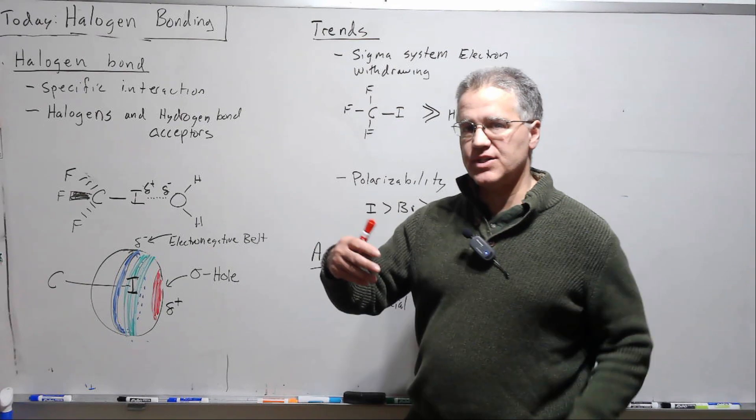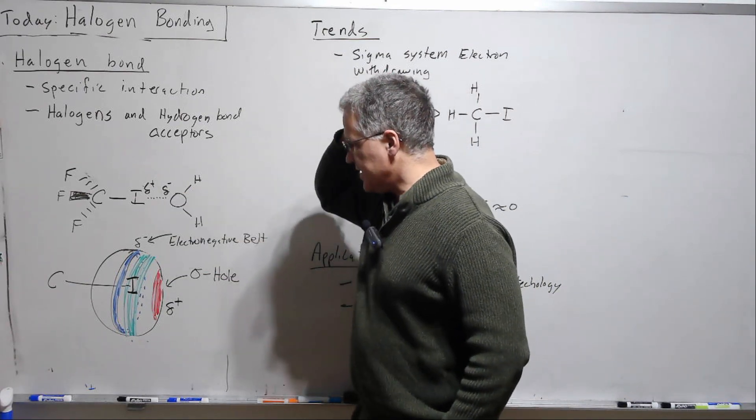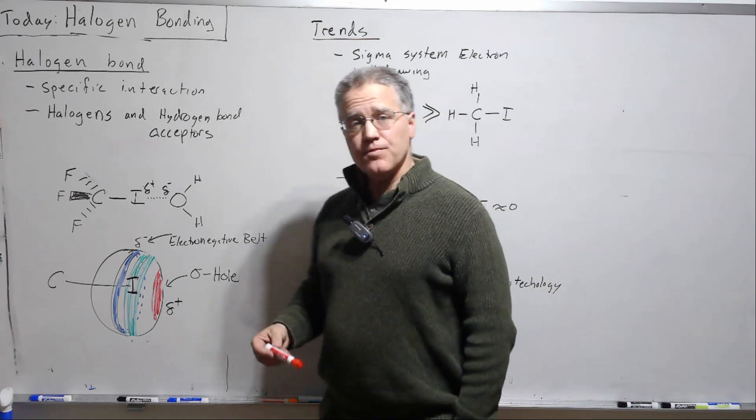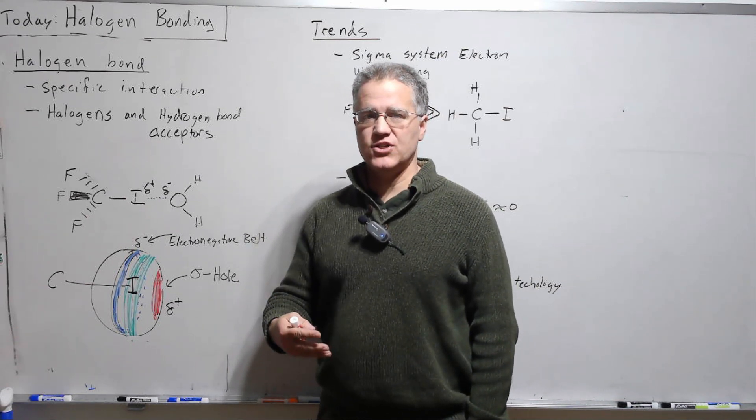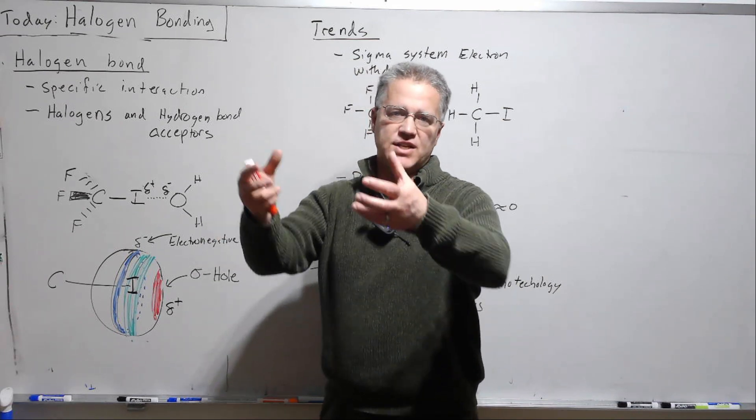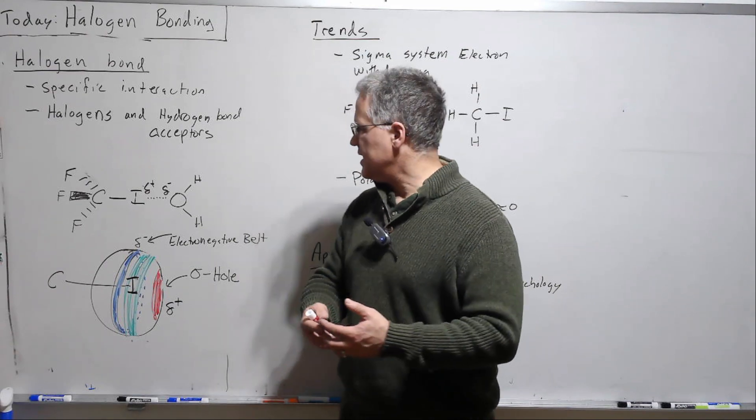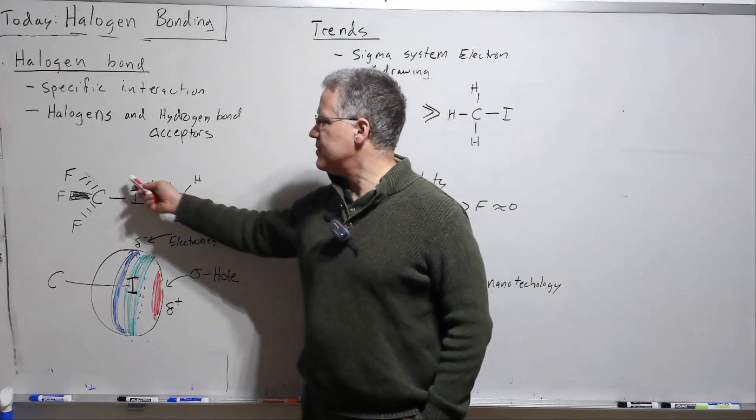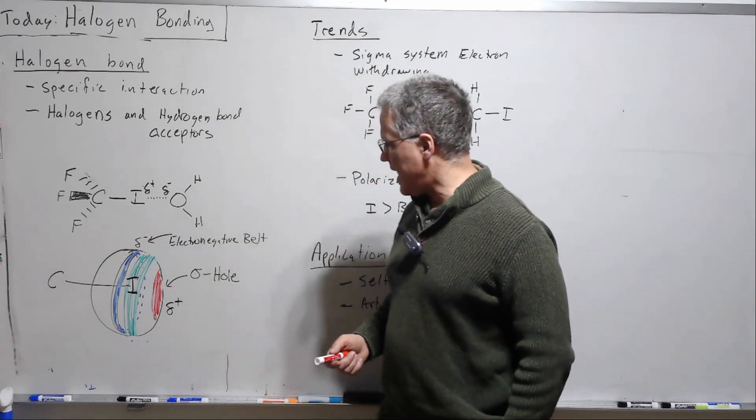So the sigma hole appears on the distal side of the bond for iodine in this case. There's more of a richness actually to halogen bonding than there is to hydrogen bonding. Hydrogen bonding just has this partial positive of this exposed hydrogen as the electrons are pulled by a more electronegative atom.